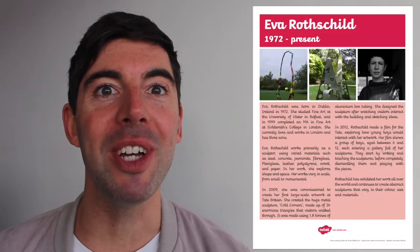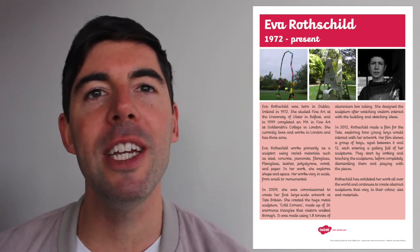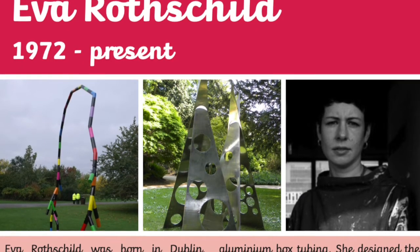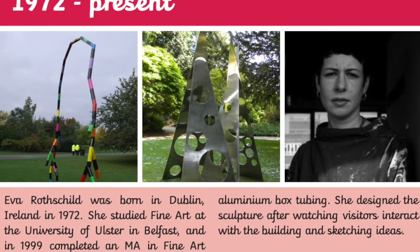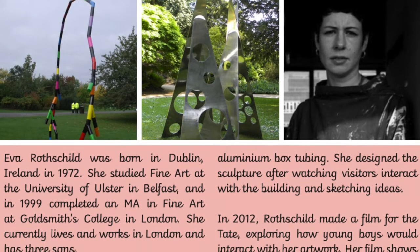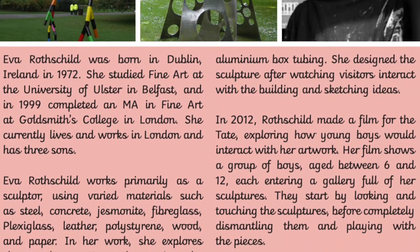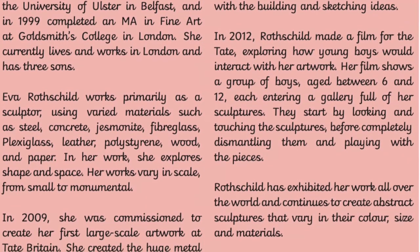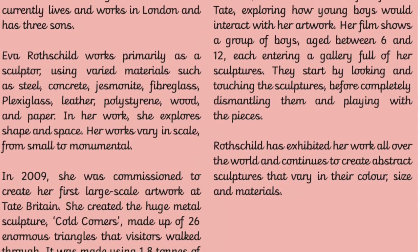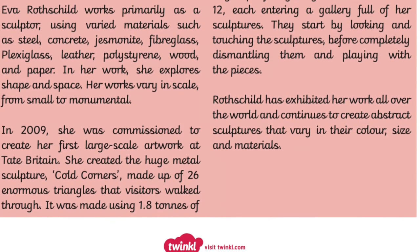We have the Irish sculptor Eva Rothschild, who often used a variety of different materials from concrete to steel to fibreglass and the list goes on. She has exhibited all around the world in well-known galleries such as Tate Britain, for whom she created a documentary in 2012 studying how young boys interacted with her artwork. When a small group were given the chance to look at her sculptures, the first thing they did was touch them and dismantle them and play with them.